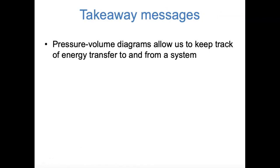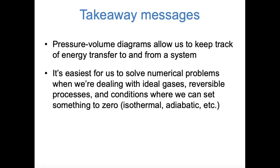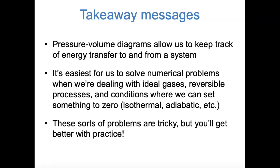Finally, a few takeaway messages. In this video, we used pressure-volume diagrams to keep track of energy transfer to and from a system. The two examples we looked at involved isothermal and adiabatic conditions. It's easiest to solve numerical problems when dealing with ideal gases, reversible processes, and conditions where we can set something to zero: in isothermal conditions, ΔU = 0; in adiabatic conditions, Q = 0; and in constant volume conditions, W = 0. These problems really do take practice, so I encourage you to work similar problems for yourself. In the next video, we'll talk about more consequences and nuances of the first law of thermodynamics.